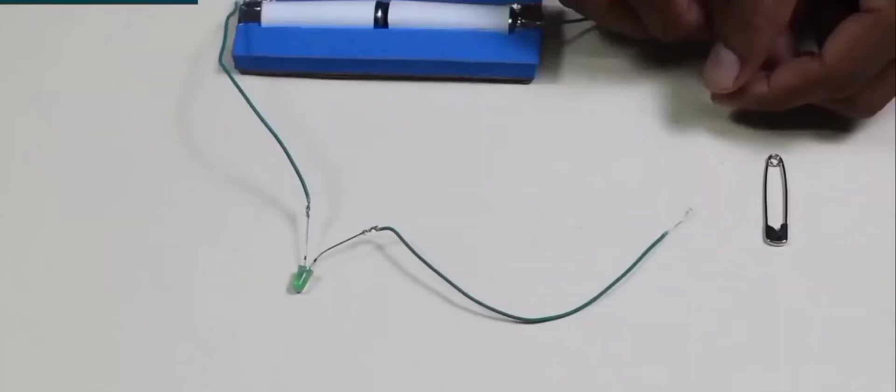This is the activity to show that metals are very good conductors of electricity. Here we have made an arrangement in which we have connected a battery made up of two cells to an LED bulb by connecting it with the help of metal wires made up of aluminum, though green color plastic covering is there on the metal wire.